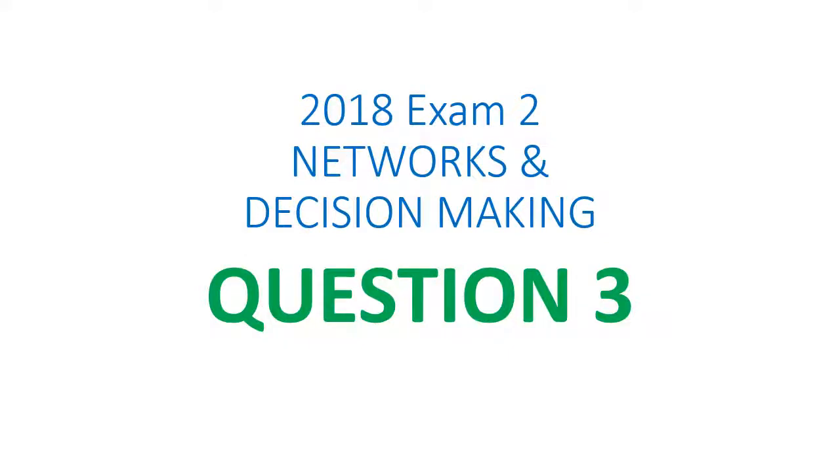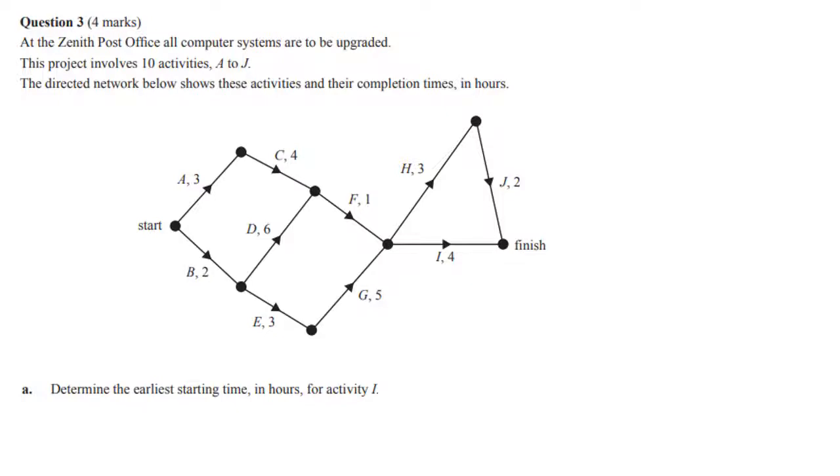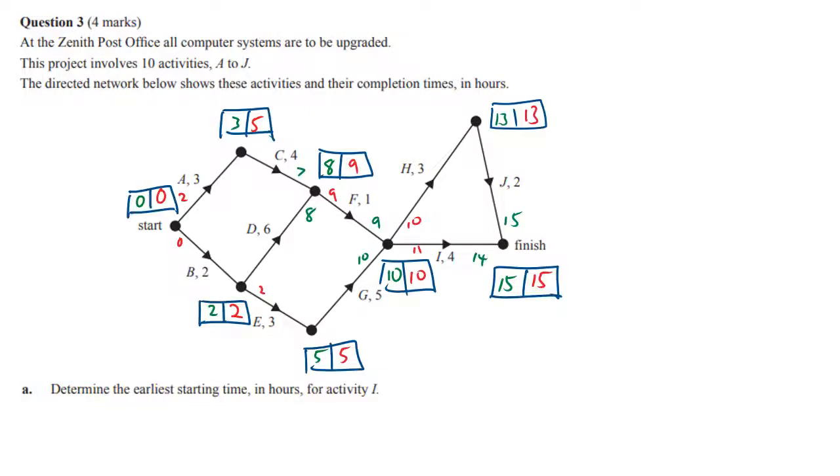2018 exam 2 networks and decision making question 3. This question asks to determine the EST or earliest start time in hours for activity I. It's a critical path analysis, so when you see these problems you need to do forward and backward scanning. I'm not going to go through that slowly.